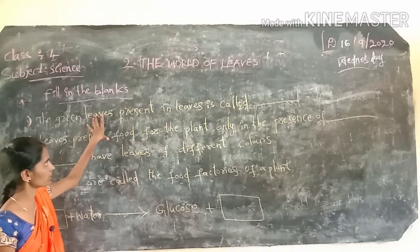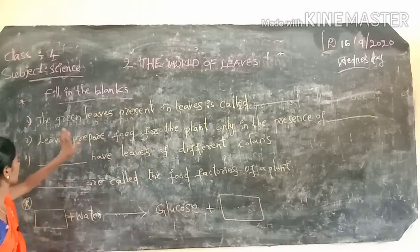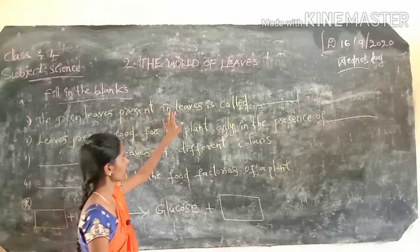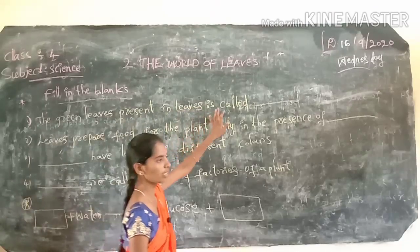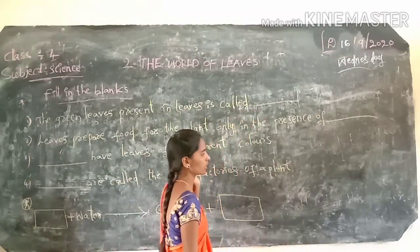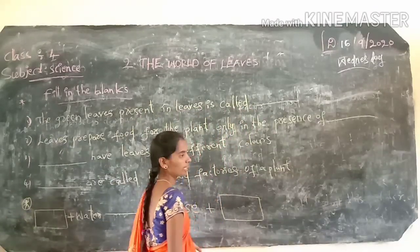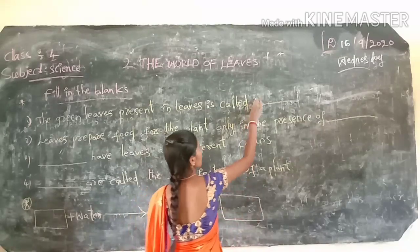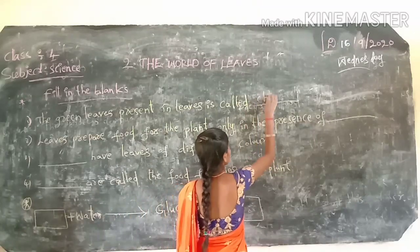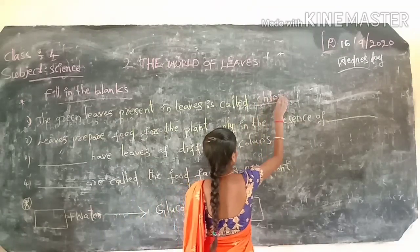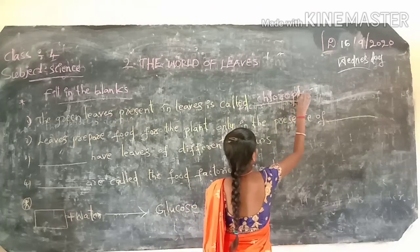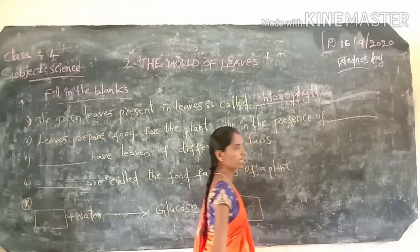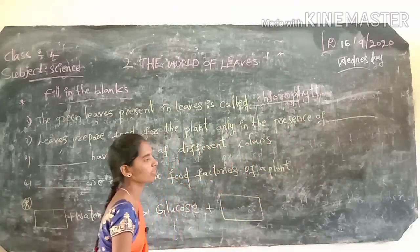Complete the sentences. First one: the green pigment present in the leaves is called — what is the answer? Green leaves contain chlorophyll. So the answer is chlorophyll.